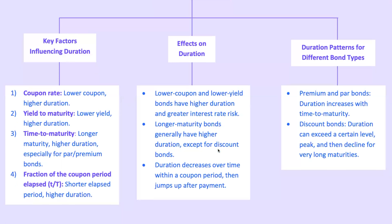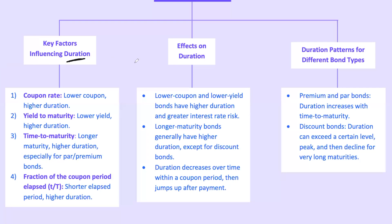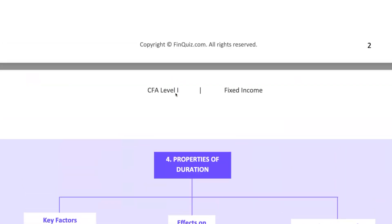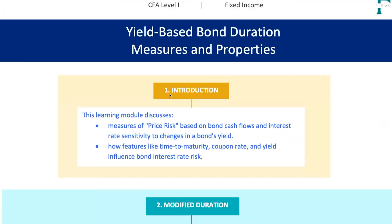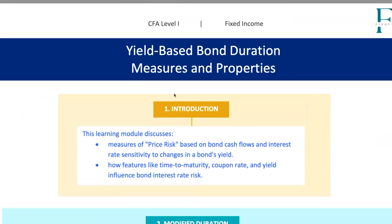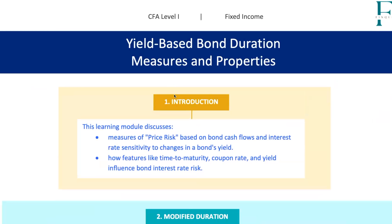And there you have it. Understanding the properties of duration is crucial for managing interest rate risk in your bond portfolio. Whether you're dealing with low coupon, low yield, or long maturity bonds, knowing how duration behaves helps you navigate the ups and downs of the market. By mastering modified duration, approximate modified duration, money duration, and PVBP, you gain a comprehensive toolkit for assessing and managing the price risk of bonds — whether you're evaluating the impact of interest rate changes or fine-tuning your bond portfolio. Keep practicing these concepts, stay sharp, and soon you'll be navigating the bond market like a pro.